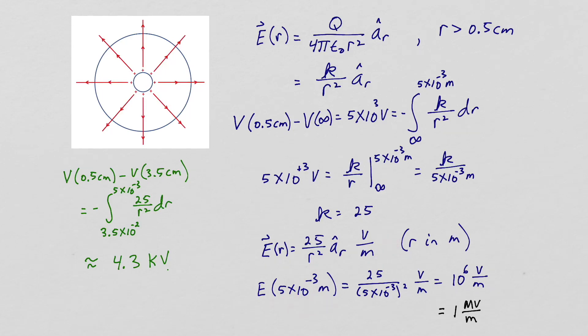Putting in the value at the surface of the Tesla coil of half a centimeter, we see that the electric field intensity coming off the Tesla coil is 10 to the 6 volts per meter, or 1 megavolt per meter. We can also calculate the voltage drop across the globe and that will be 4.3 kilovolts. So we'll have 700 volts dropped outside of our globe.